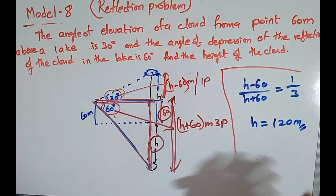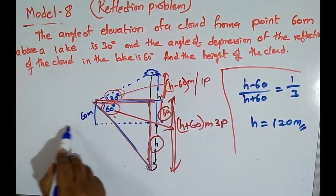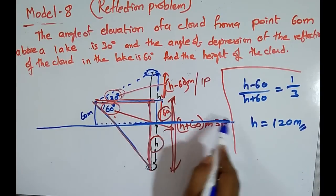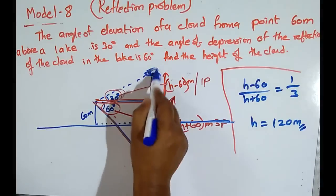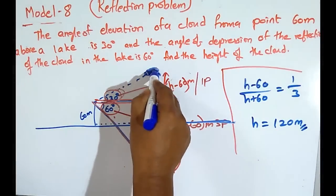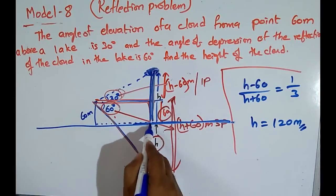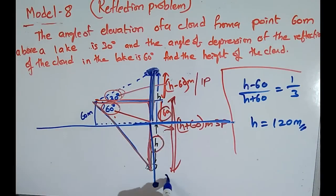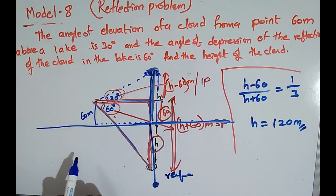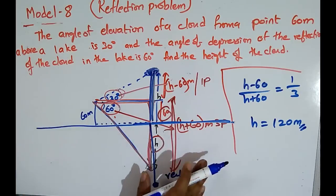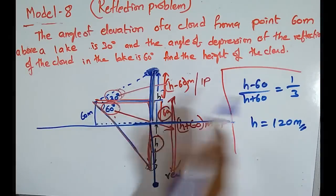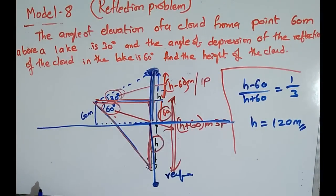The key principle here is that if the lake surface is a mirror, any cloud or bird above the lake at height H will have its reflection at the same depth H below the surface. Using this, we develop two triangles with angles 30° and 60° and solve for the answer.